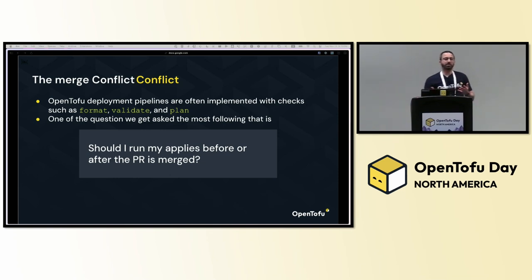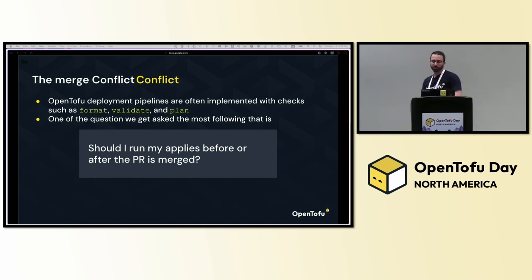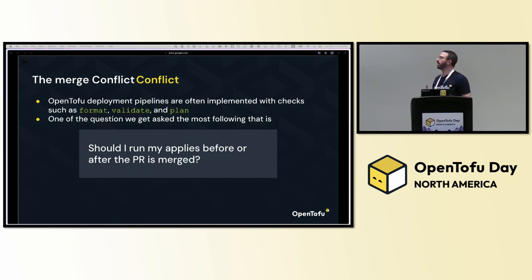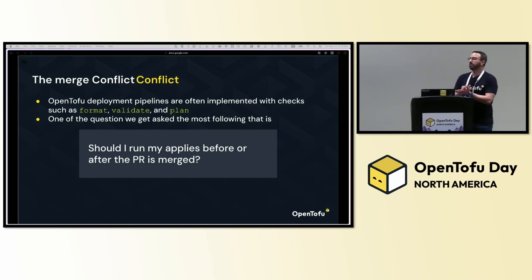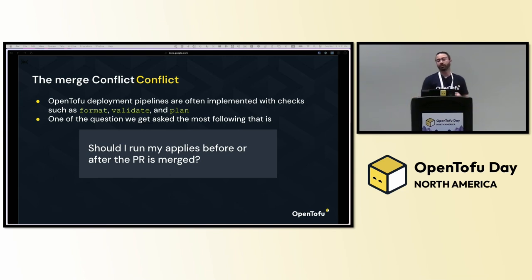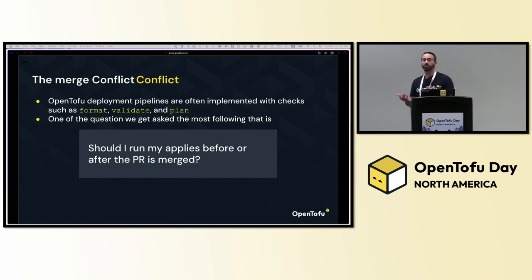When we implement IaC solutions for customers with OpenTofu, a lot of the times as part of the pipeline there's usually some sort of validation — some sort of checks that are there, I will say 90% of the time — like format, validate, and a lot of times running plans. One of the questions I get asked the most is: I ran the plan, I want to run apply — when do I run it? Should I run it after I merge the PR, or do I run it before, during the PR itself? So let's review both approaches and some of the pros and cons of them.